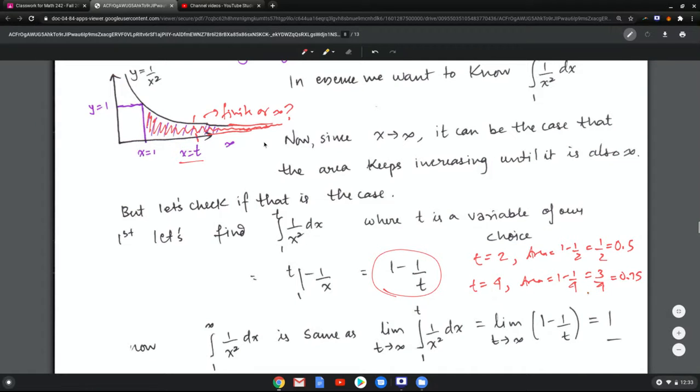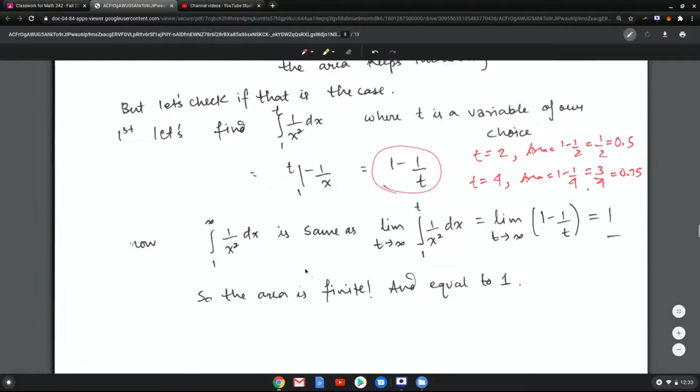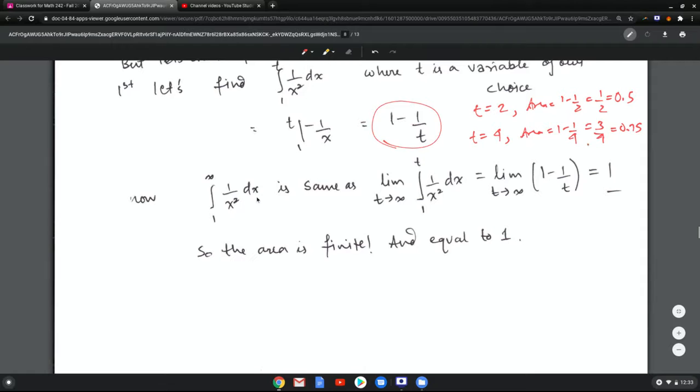Now we can reframe the question of 1 to infinity, 1 over x squared dx, as the same as 1 to t of 1 over x squared dx but letting t go to infinity. And now under the limit, 1 minus 1 over t just becomes 1.